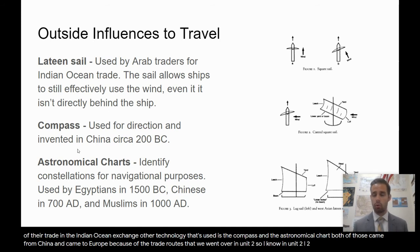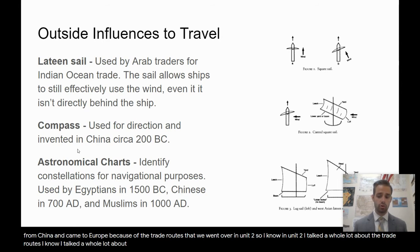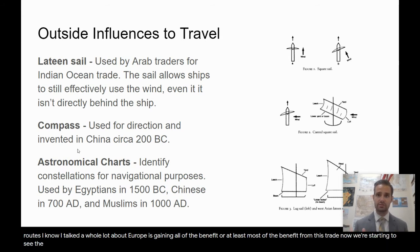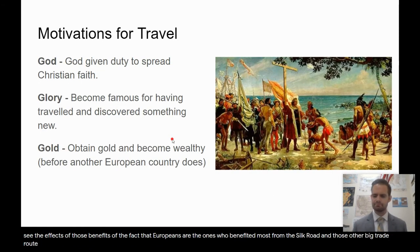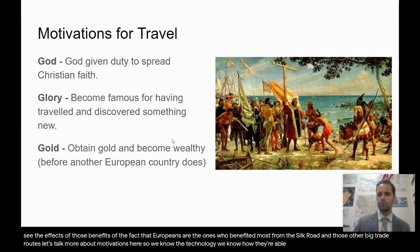In unit two, I talked a lot about the trade routes and how Europe gained the benefit from this trade. Now we're starting to see the effects of those benefits — the fact that Europeans were the ones who benefited most from the Silk Road and those other big trade routes. Now let's talk more about motivations. We know the technology and how they're able to do it, but we have to go over why.